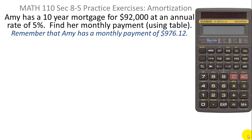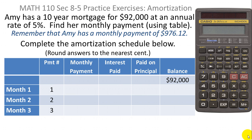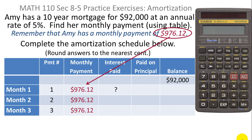Now let's make a little adjustment and ask another question, but we need to remember that Amy's monthly payment is $976.12. They want us to complete an amortization schedule, very similar to what we did in the previous problem. They want us to round answers to the nearest cent. We need to fill in the missing information. The balance of $92,000 is already started, and the monthly payment of $976.12 never changes, so it goes all the way down.